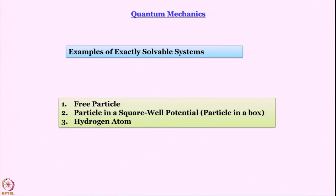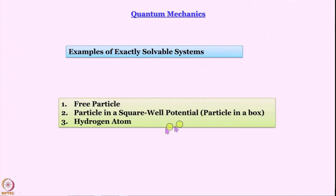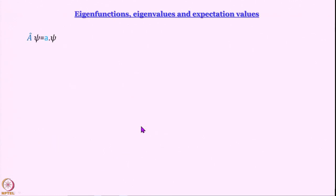As we are going to see in the next couple of modules, quantization arises out of the imposition of these conditions. We will study three systems: today we will talk about the free particle, then we will put it in a square-well potential — the particle-in-a-box problem — and finally we will discuss the hydrogen atom. But before that, I want to talk a little bit about eigenfunctions, eigenvalues, and expectation values.